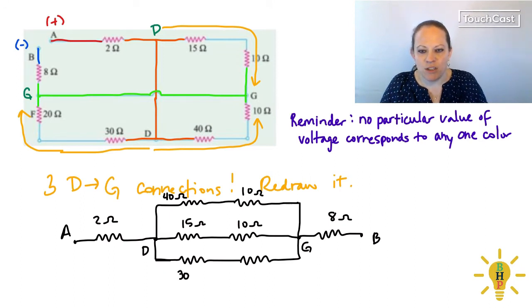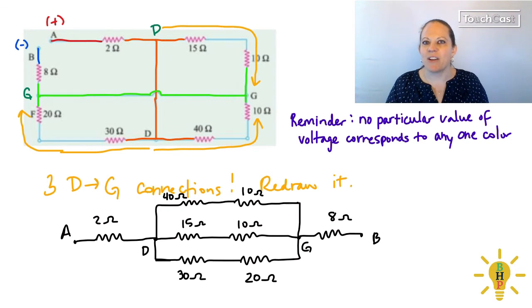You know, especially in this problem, because we don't have a battery, we don't actually know specific values. But again, it's a qualitative tool. So notice that what we basically have is two ohms in series with a parallel network with three branches. And then that is further in series with eight ohms. So now we can really easily reduce this.